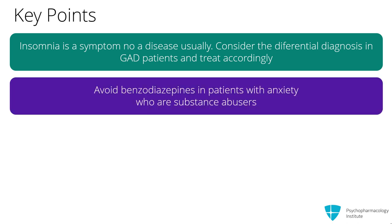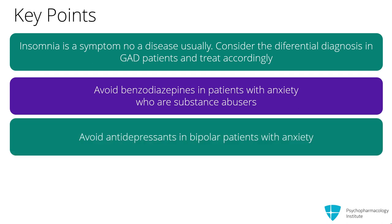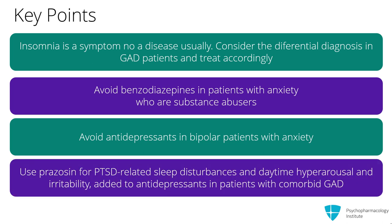Avoid benzodiazepines in patients with anxiety who are substance abusers. Avoid antidepressants in bipolar patients with anxiety. And finally, use prazosin for PTSD-related sleep problems and daytime hyperarousal and irritability, added to the antidepressants they're on for their GAD in this comorbidity.